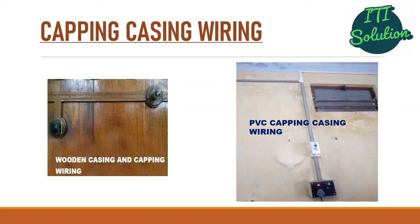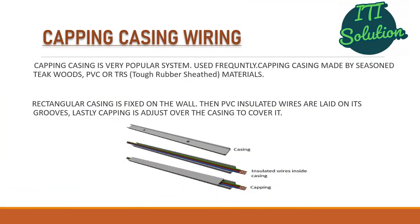Now we discuss about capping casing wiring. This is the wooden capping casing wiring and this is the PVC capping casing wiring. Capping casing is a very popular system used frequently. Capping casing is made by seasoned teak wood, PVC, or TRS — tough rubber sheeted materials. A rectangular casing is fixed on the wall, then PVC insulated wires are laid in the grooves, and lastly capping is adjusted over the casing to cover it.